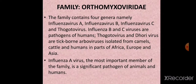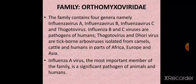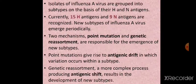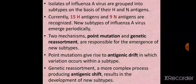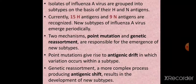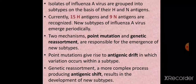Influenza A is the most important member of this family and is a pathogen of both animals and humans. The isolates of influenza A viruses are grouped into subtypes on the basis of their H and N antigens — hemagglutinin and neuraminidase — which are antigenic and responsible for evoking antibody formation in the host.